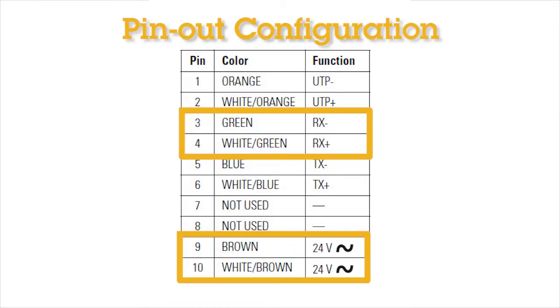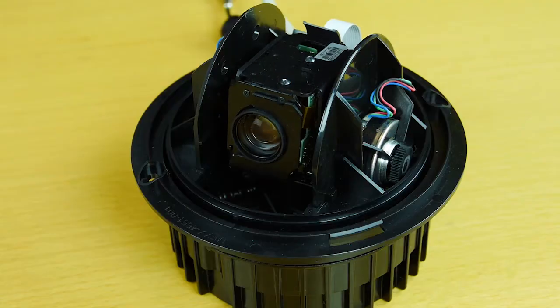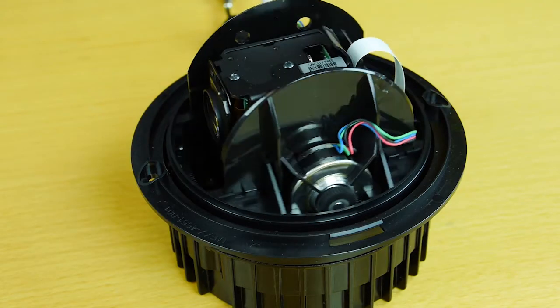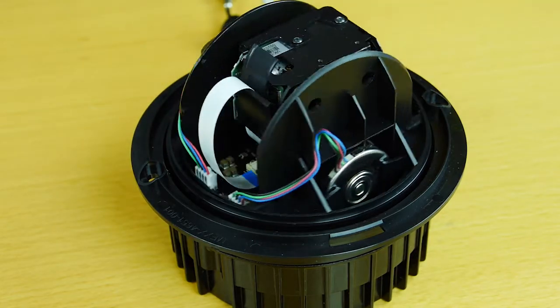According to this pinout, the green and green striped cables are used to transmit and receive data in that order. The brown and brown striped cables are used to connect to power in no particular order. We should see the PTZ boot up at this point.